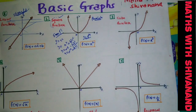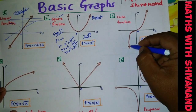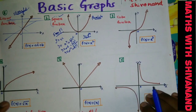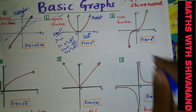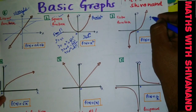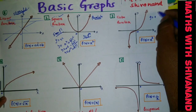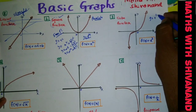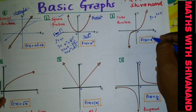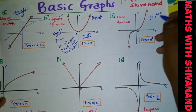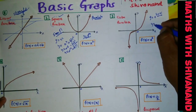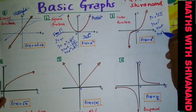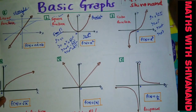Graph number three is the cube function — y = x³. It is a cube function. So y = x³, or more generally y = x^(2n+1) for any odd power. For example, y = x³, y = x⁵, y = x⁷, y = x⁹ — any odd-power curve will be of this s-curve shape only.